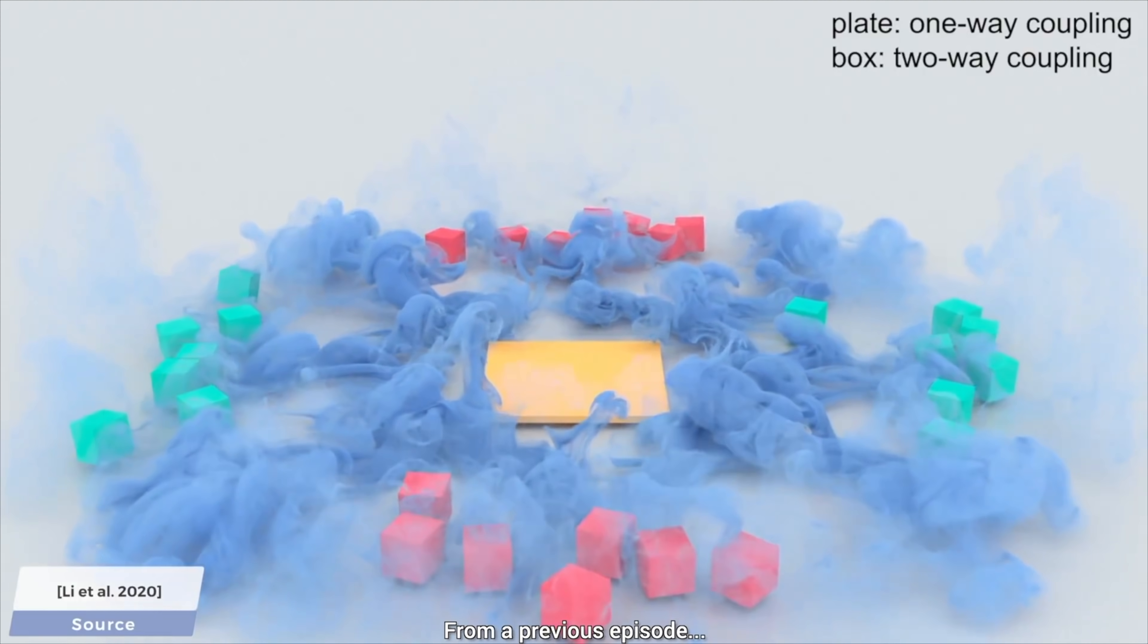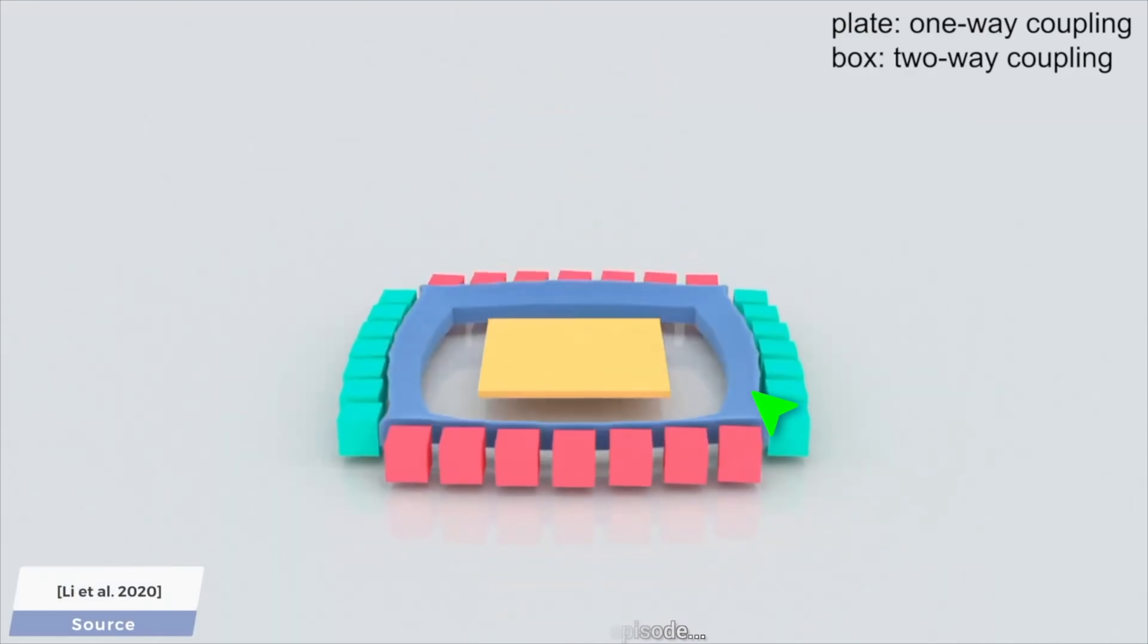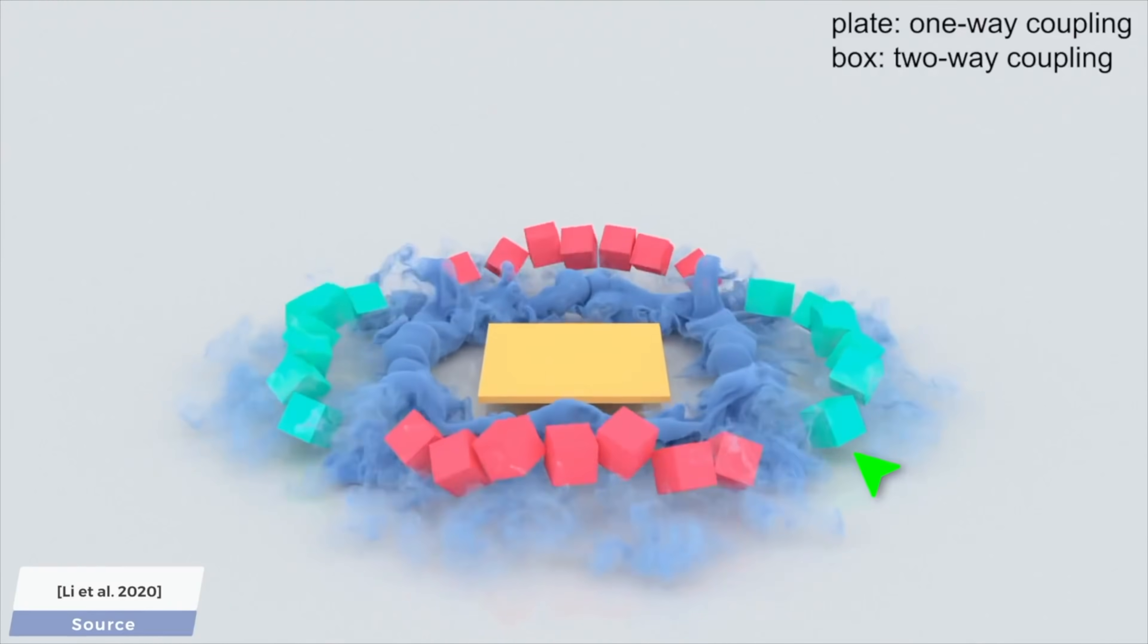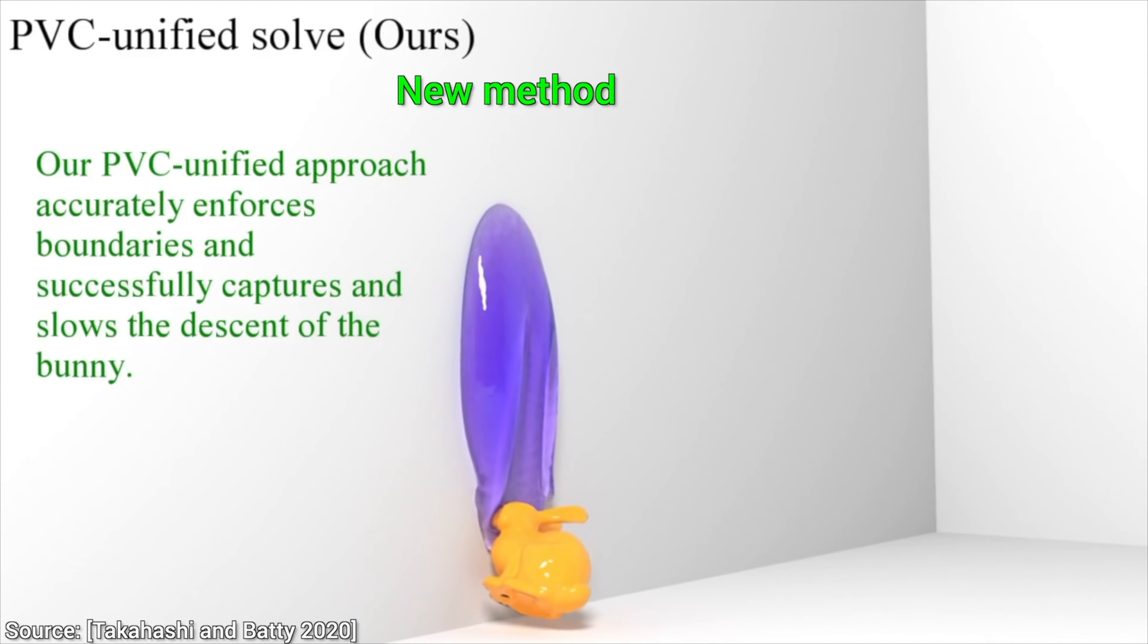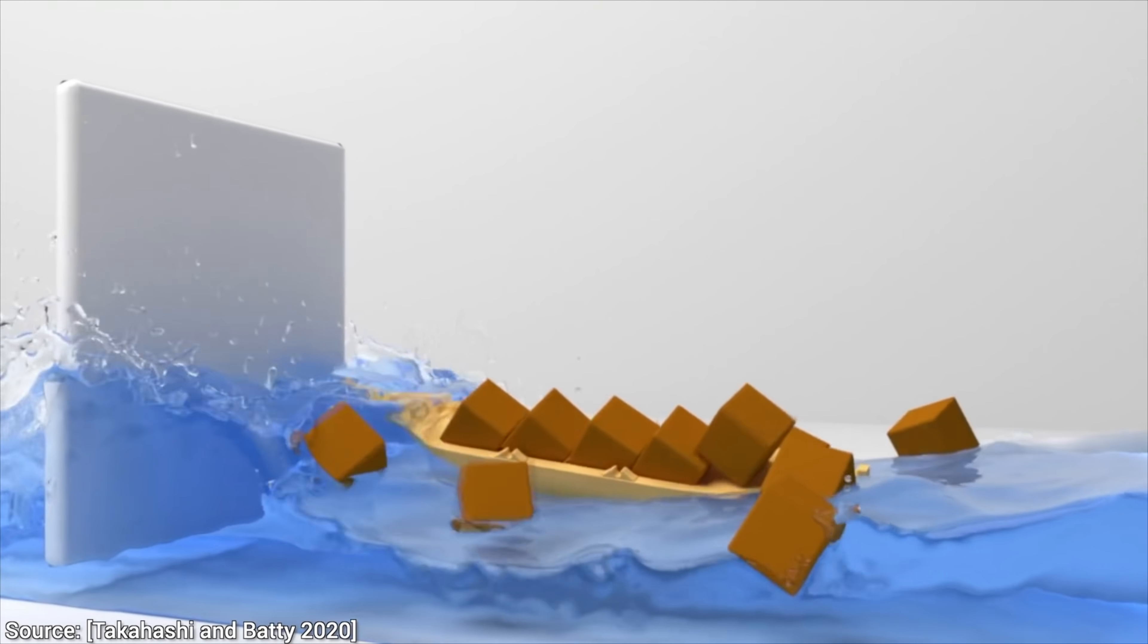It means that here, the boxes are allowed to move the smoke, and the added two-way coupling part means that now, the smoke is also allowed to blow away the boxes. This previous work simulates these phenomena properly. It also makes sure that when thrown at the wall, things stick correctly, and a ton of other goodies too.